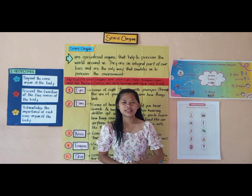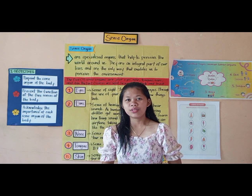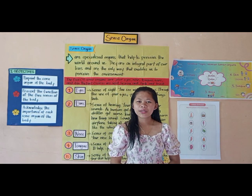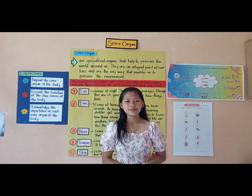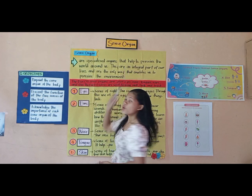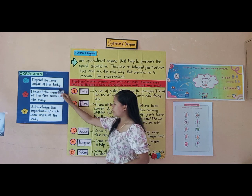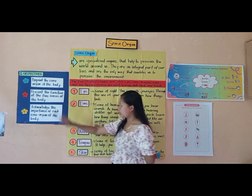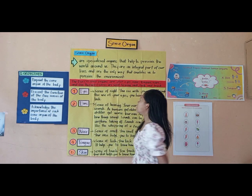Before anything else, what is our topic for today? What did you see around you? Did you hear a sound? What part of the body is used for seeing and hearing those things? So, our topic for today is all about the sense organs. The objective of this topic is: first, to identify the sense organs of the body; second, to present the function of the five senses; and third, to acknowledge the importance of each sense organ of the body.